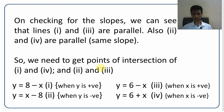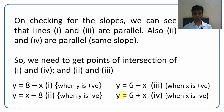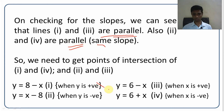When we solve, we find that equation 1 (y = 8 minus x) and equation 3 (y = 6 minus x) have the same slope — they are parallel lines and cannot intersect. Similarly, equation 2 (y = x minus 8) and equation 4 (y = x plus 6) also have the same slope — also parallel lines. So equations 1 and 3 are parallel, and 2 and 4 are parallel. That means only two pairs remain to check: 1 with 4, and 2 with 3.